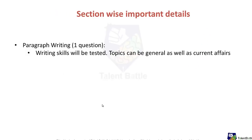The next part is paragraph writing, where your writing skills are tested. Topics can be general as well as current affairs. Previous examples include: 'India Vision 2020', 'How do you contribute to your society via your work?', 'Is technology as destructive as it is constructive?', and topics like the impact of coronavirus. In the online paragraph writing test, they primarily focus on grammar, word count, and punctuation.